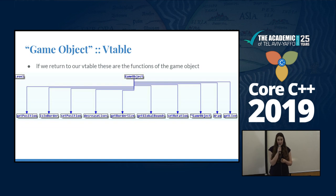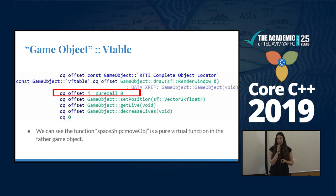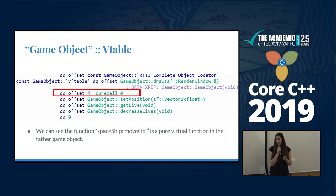The game object has a lot of functions in its Vtable. What is most interesting here is the 'pure call' — we saw that the spaceship had one function that was different in the Vtable compared to the many game object functions. That one was 'moveOpt', the spaceship-specific one. This is why we have a pure call visible in the assembly, which was then overridden in the spaceship.